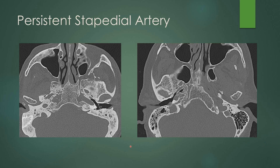A persistent stapedial artery is harder to diagnose because it's difficult to see the stapedial artery. When looking at a temporal bone CT for pulsatile tinnitus, always look for the presence of foramen spinosum. Here's foramen ovale, which is anteromedial, and here is foramen spinosum, which is posterolateral at the skull base — the opening for the middle meningeal artery. Absence of the middle meningeal artery leads to a persistent stapedial artery to supply the intracranial dura. If foramen spinosum is absent, that can be an indication of a persistent stapedial artery, whether you can see it or not.